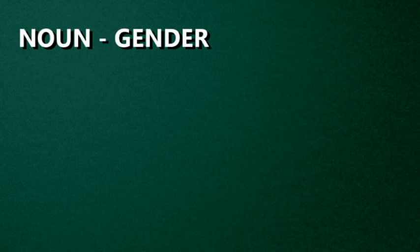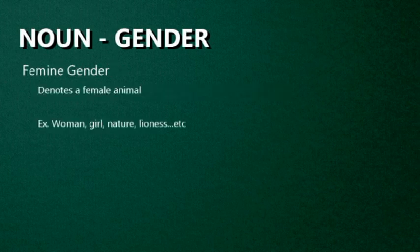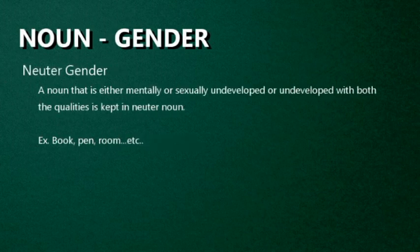Then, Gender. In a noun there are four genders. First one: Masculine Gender — a noun that denotes a male animal is said to be of the masculine gender. Examples: man, boy, tiger, son. Second: Feminine Gender — a noun that denotes a female is said to be of the feminine gender. Examples: woman, girl, lioness. Third: Common Gender — a noun that denotes either male or female is said to be of the common gender. Examples: parent, child, student, cousin — both genders are applicable here. Fourth: Neuter Gender — a noun that denotes a thing without life, neither male nor female, is said to be of the neuter gender. Examples: book, pen, room — we cannot say it is a male book or female book, so it is the neuter gender.